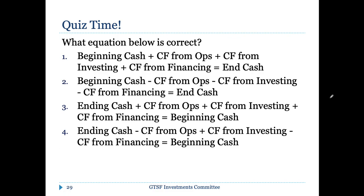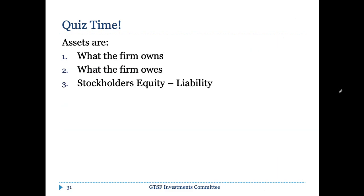Quick quiz: which cash flow equation is correct? Remember: beginning cash plus cash flow from operations plus cash flow from investing plus cash flow from financing equals ending cash. That's the correct answer. Also: assets are what the firm owns, liabilities are what the firm owes, and assets equal liabilities plus stockholder equity.